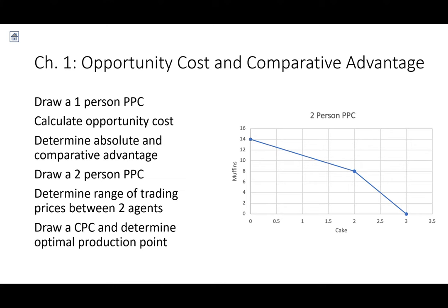Chapter one was about opportunity costs and comparative advantage. We drew a one-person PPC — you spend all your time on apples or all of your time on bananas, graph the two extreme points, connect them with a line, and that's our PPC. To calculate opportunity cost, take the slope of the PPC for the good on the x-axis, and take the reciprocal for the good on the y-axis. Opportunity cost is the value of the next best alternative.